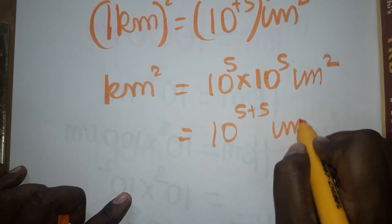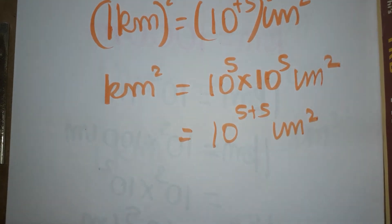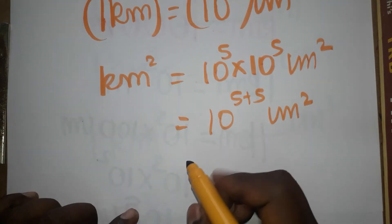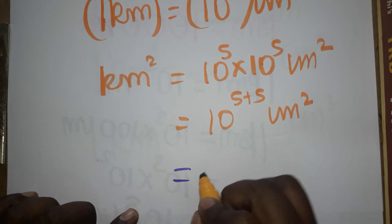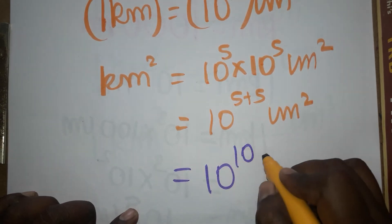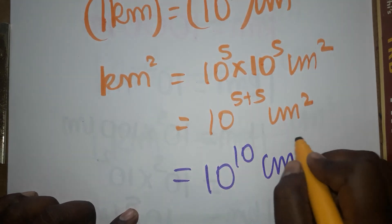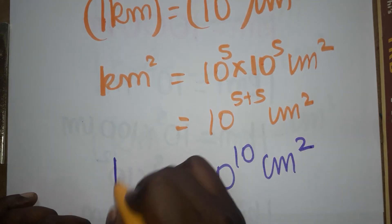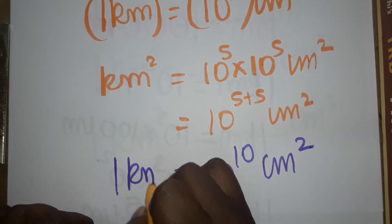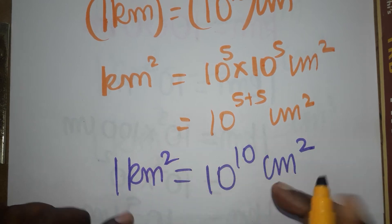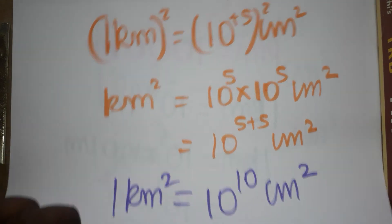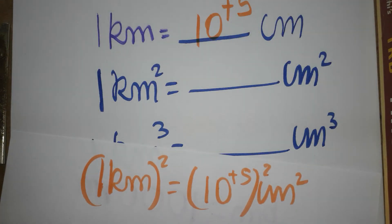10 power 5 plus 5 is 10 power 10 centimeter square. So one kilometer square is equal to 10 power 10 centimeter square.